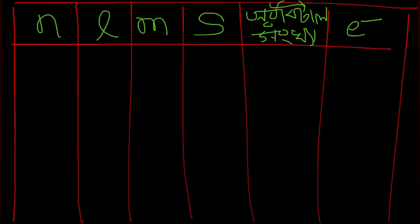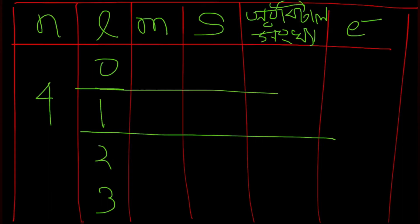When we call n equal to 4, we'll have l values: 0, 1, 2, 3. We know that m is plus or minus 1, so we will work through this.